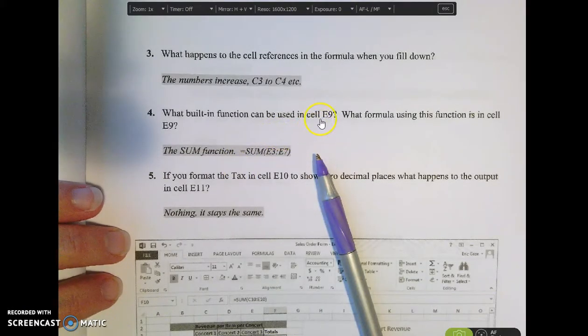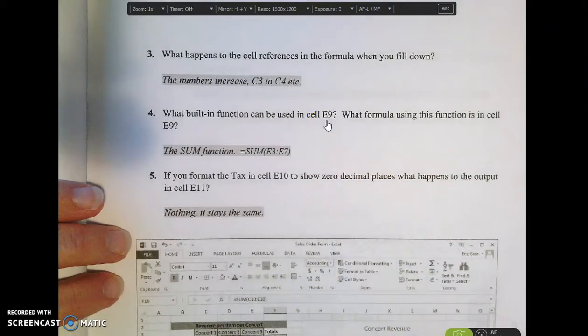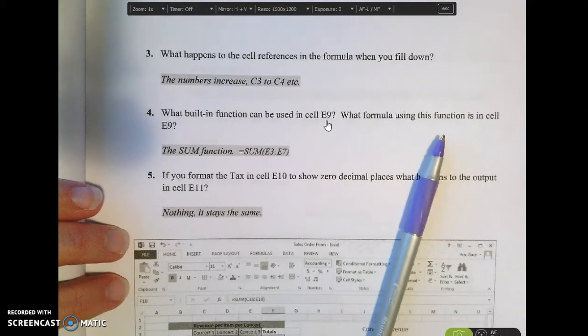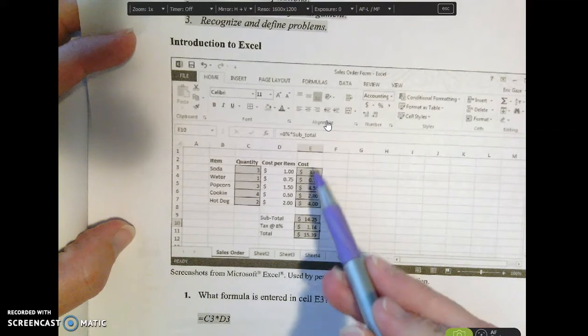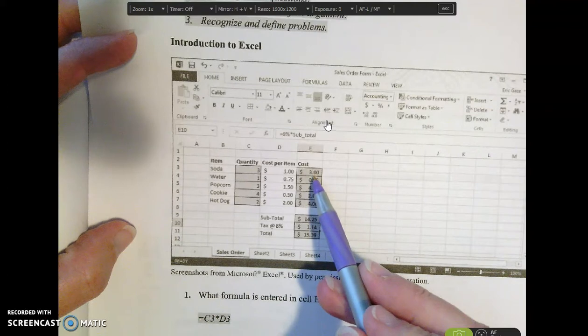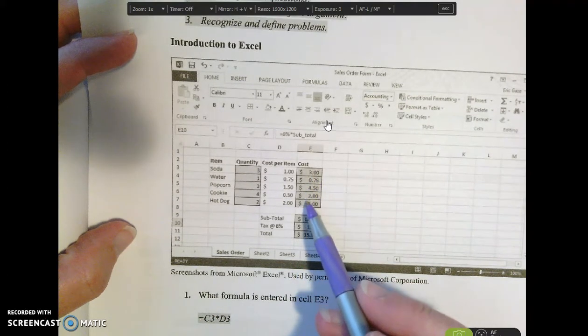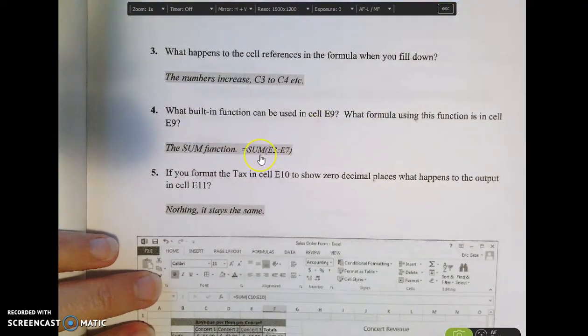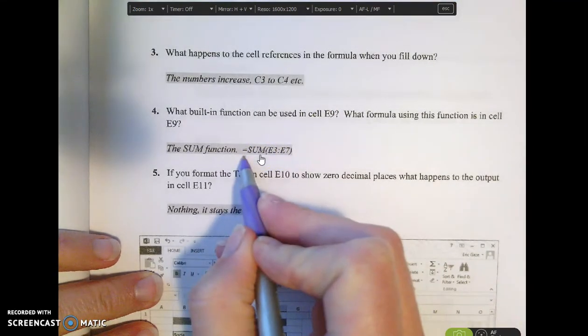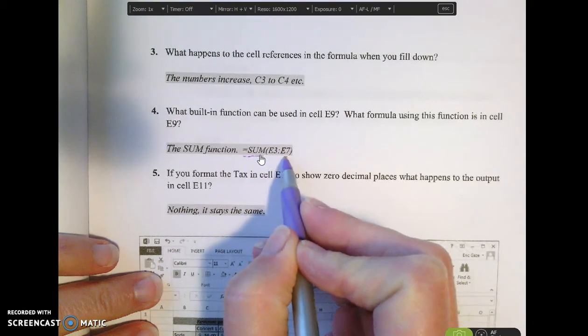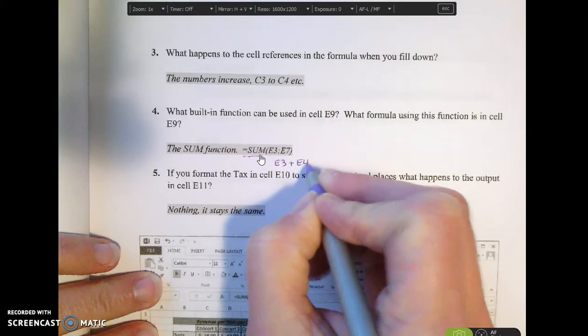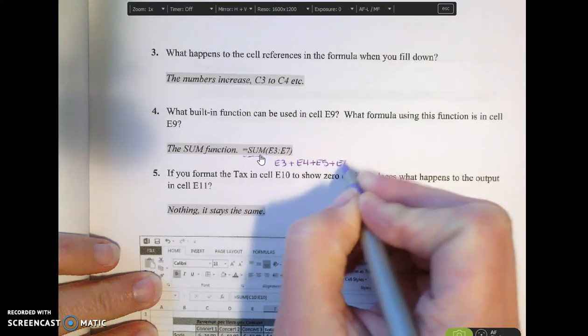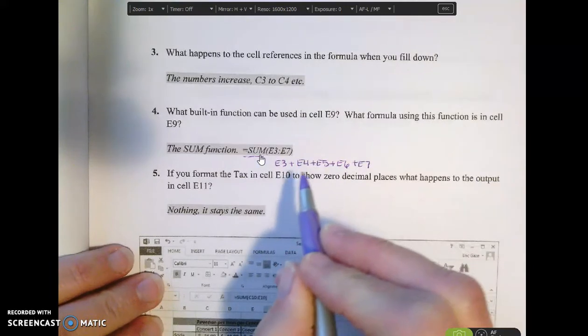Okay, so what built-in function can we use in cell E9? So cell E9 is the cell where we had the sum of all the values. Cell E9 is this value right here. We want to find the sum of all these values. So instead of typing E3 plus E4 plus E5 plus E6 because that can get tedious again, we're going to find the sum of all these values. So if I type in equals and then sum E3 colon E7, it'll take all the values from E3 to E7 and add them up. So this is like saying E3 plus E4 plus E5 plus E6 plus E7, but it's a much simpler way of typing it with less mistakes that can be made.